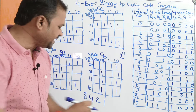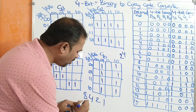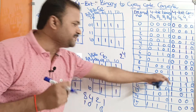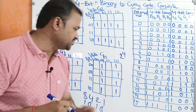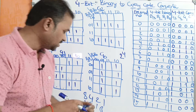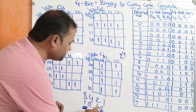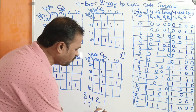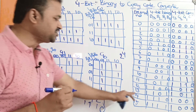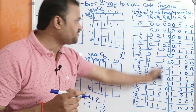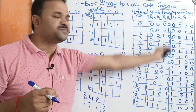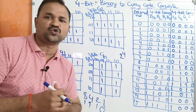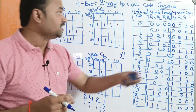Let us take 10. What is 10? It is the sum of 8 and 2, so 10 means 1010. Let us take 14. How can we represent 14? 14 means 8 plus 4 plus 2, so 1110. In this way we can represent any decimal number in binary notation using 8421 notation.